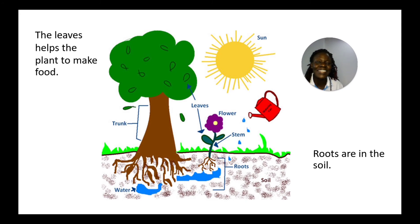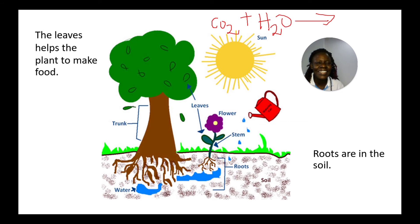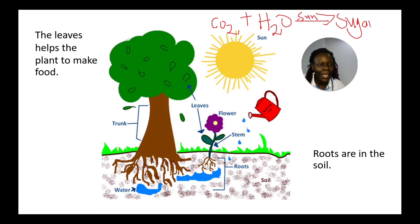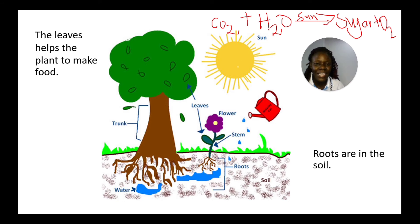Photosynthesis is when plants use carbon dioxide (CO₂) plus water (H₂O) in the presence of sunlight to produce sugar (glucose) — which is the food for the plant — and oxygen (O₂) that we breathe in. Plants absorb water with their roots and use sunlight through their leaves.